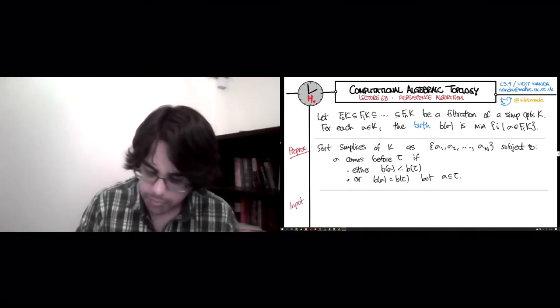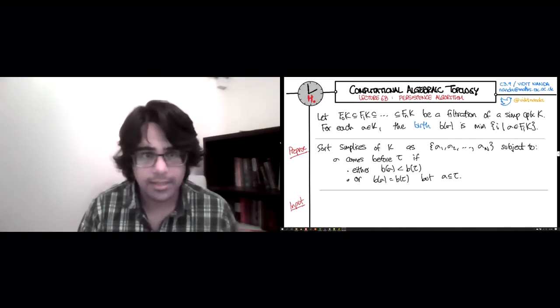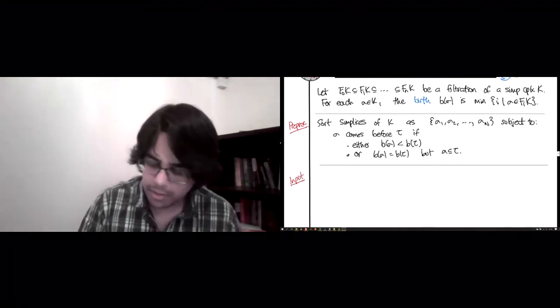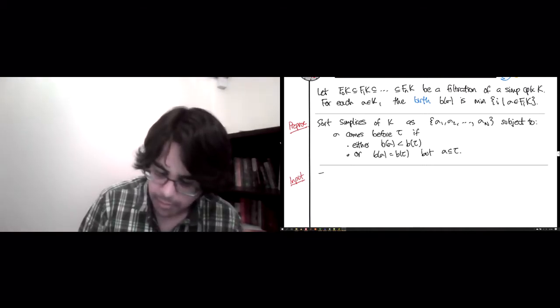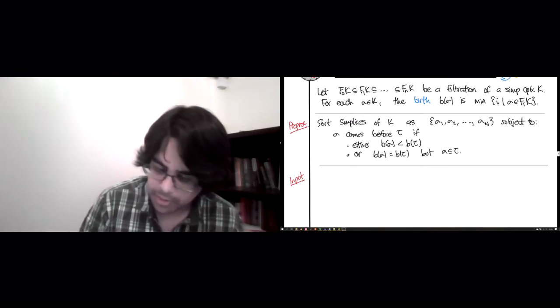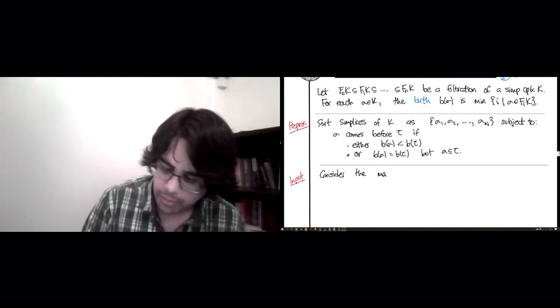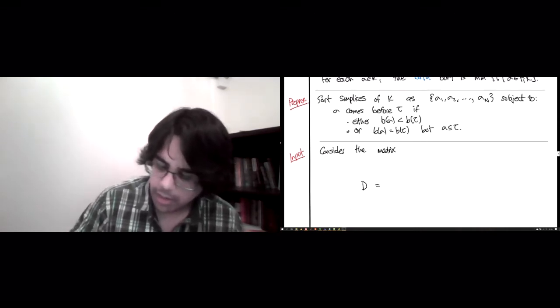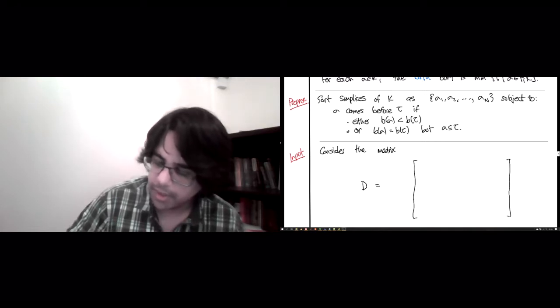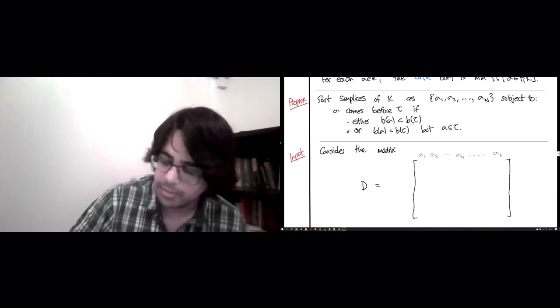Okay, and here's the input. We're not going to sort of feed it the whole filtration. We're going to feed it a matrix. That's what goes into the algorithm. So the input is big N by big N matrix. So consider the matrix, which I'll call D. Its rows and columns are going to be labeled by our simplices, so sigma 1, sigma 2, sorted in the right order. So sigma Q is somewhere in the middle, sigma big N.